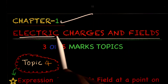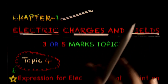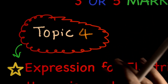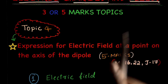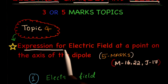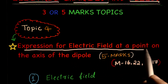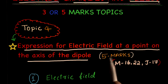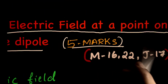Chapter 1: Electric Charges and Fields. This is our fourth topic. The discussion is going to be on the expression for electric field at a point on the axis of a dipole. This is a 5 marks topic.